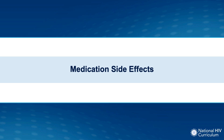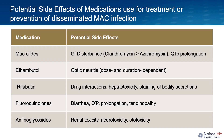Regarding medication side effects: macrolides — azithromycin and clarithromycin — most commonly cause gastrointestinal disturbance, with clarithromycin causing worse GI side effects than azithromycin. Both can cause prolonged QTc. Ethambutol can cause optic neuritis, which is dose- and duration-dependent, so individuals on ethambutol should have regular ophthalmologic evaluation. Rifabutin turns body secretions orange, can cause hepatotoxicity, and is notorious for drug-drug interactions as a CYP450 inducer. Fluoroquinolones can cause diarrhea, prolonged QTc, and tendinopathies. Aminoglycosides used for disseminated MAC treatment are associated with renal toxicity, neurotoxicity, and ototoxicity.